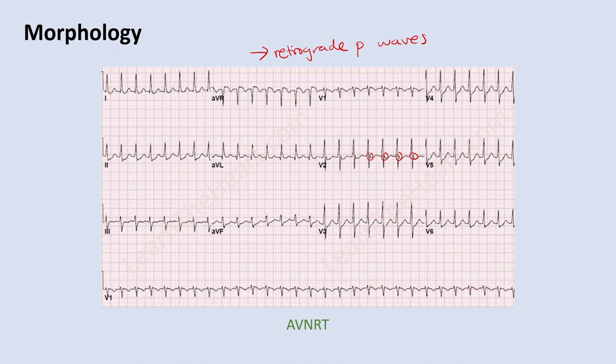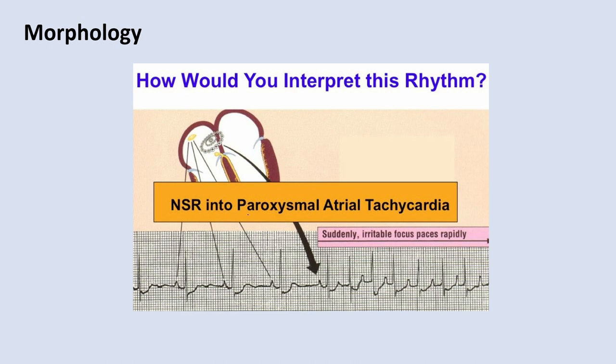This is paroxysmal atrial tachycardia, or PAT. You have a normal P wave morphology, and then all of a sudden tachycardia starts with a different P wave morphology. An ectopic focus — rather than the normal SA node — suddenly drives the heart, causing tachycardia with a new P wave morphology and a rapid rate.